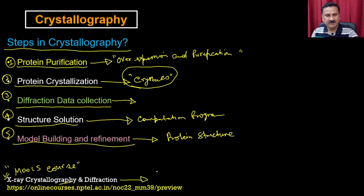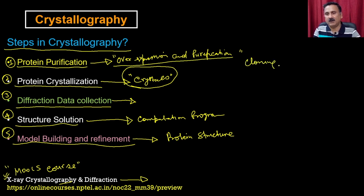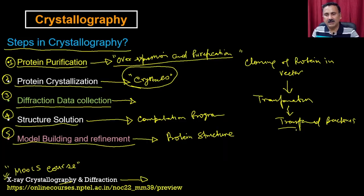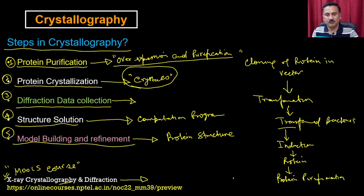The first step is overexpression and purification. In this step, you do the cloning of the protein or enzyme into a suitable vector, then you do the transformation to get transformed colonies — transformed bacteria or whatever expression host you are using — and then if you do the induction, that is going to give you the protein. Ultimately you do the protein purification, because you are supposed to have 99 percent pure protein for crystallization.